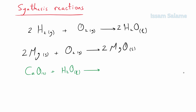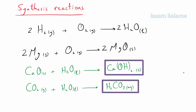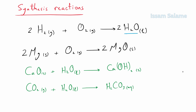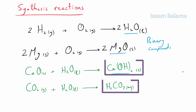Two more examples: the reaction of calcium oxide with water to give calcium hydroxide, and carbon dioxide with water to give carbonic acid. These are also synthesis reactions since we have only one product each. The products of the first two reactions are called binary compounds since each is made up of two elements, while the products of the second two examples are called ternary compounds since they are made up of three elements each.